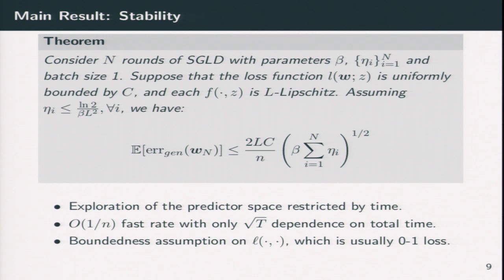And so here comes our conclusion. For stability analysis, we basically get some bounds like this. The generalization bound is depending on basically some Lipschitz parameter and the square root of aggregated step size through the algorithm. And we achieve one over N rate.